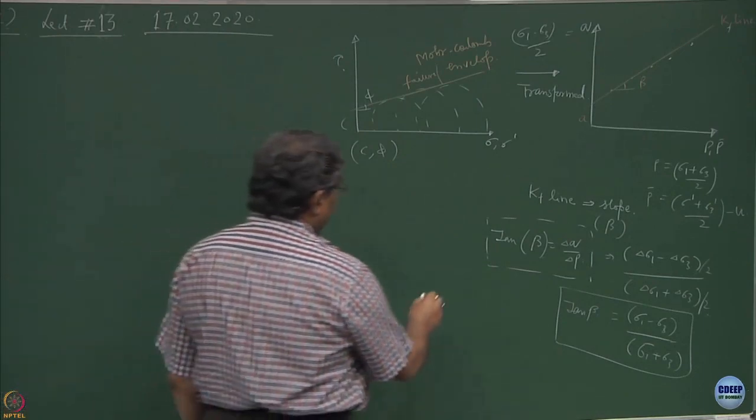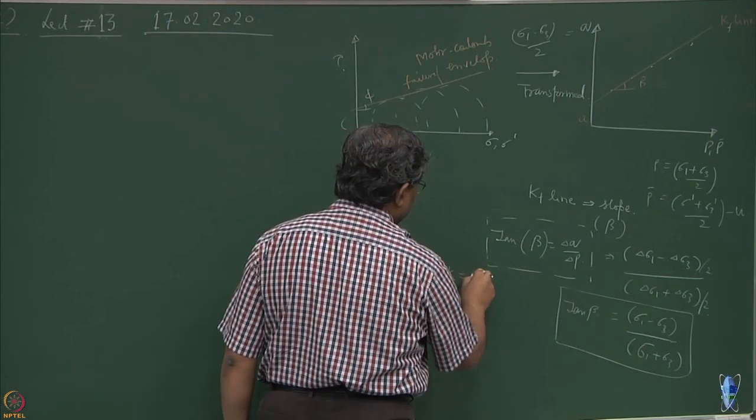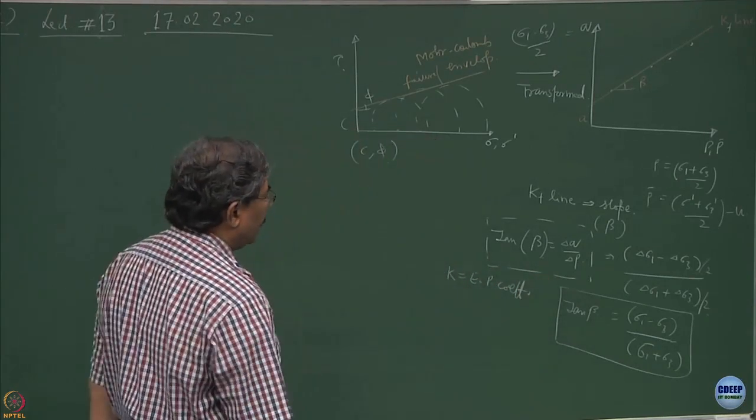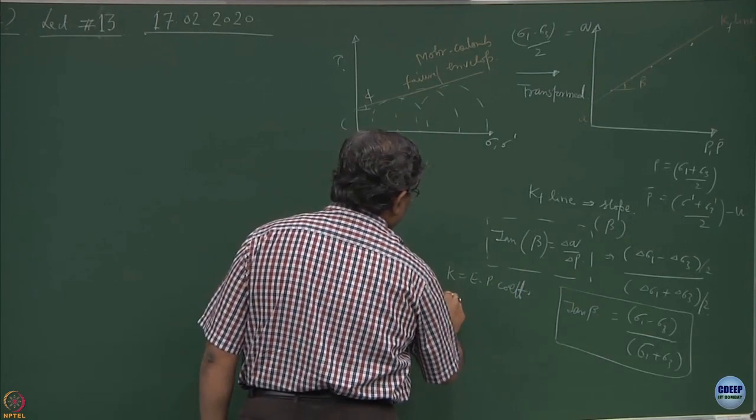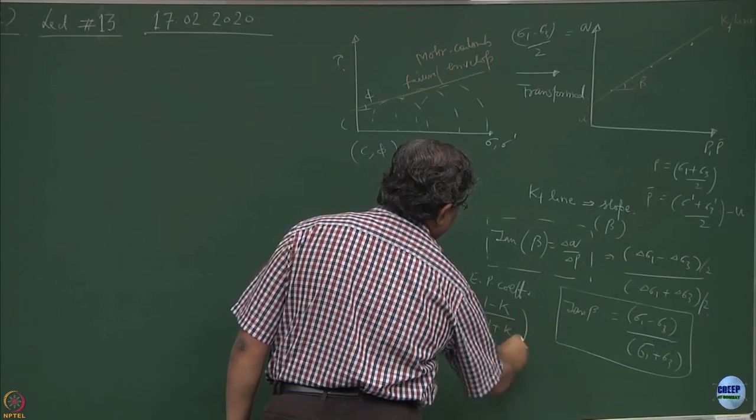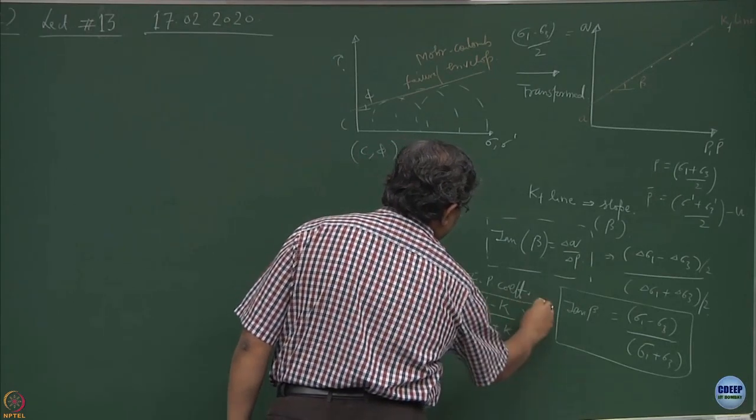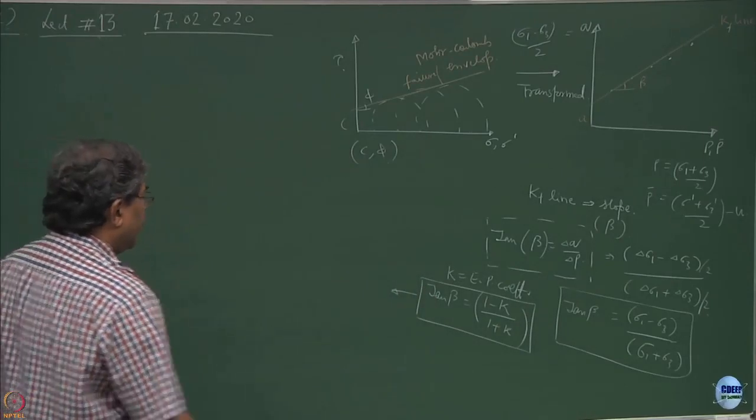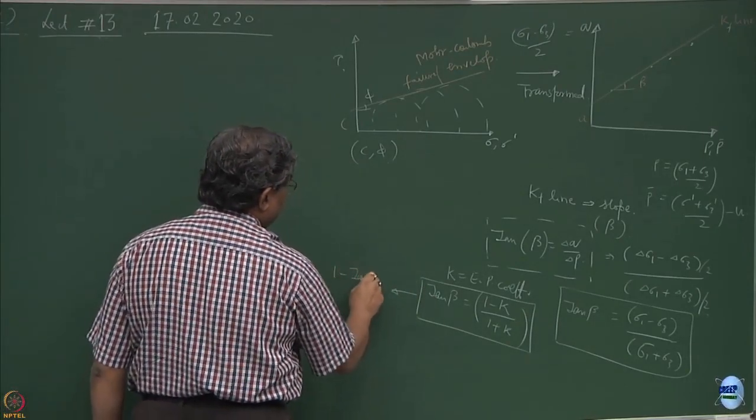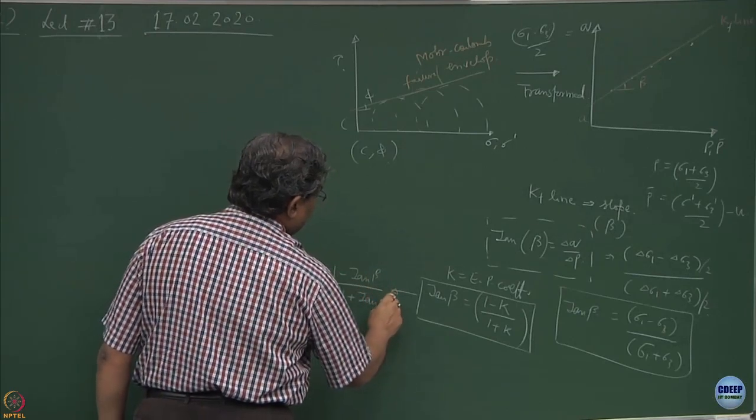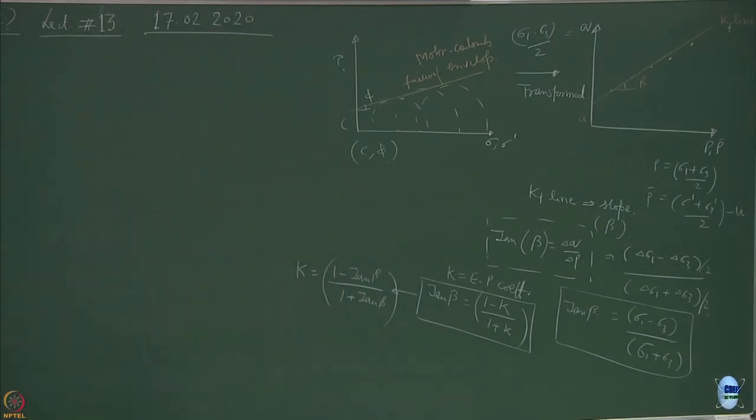If initial values are zero, I can write this as sigma 1 minus sigma 3 divided by sigma 1 plus sigma 3. That means tan beta has been related with the state of stress existing in the sample. If I introduce the concept of K parameter, the earth pressure coefficient, I can write tan beta equal to 1 minus k over 1 plus k. This will also give me k equal to 1 minus tan beta over 1 plus tan beta.